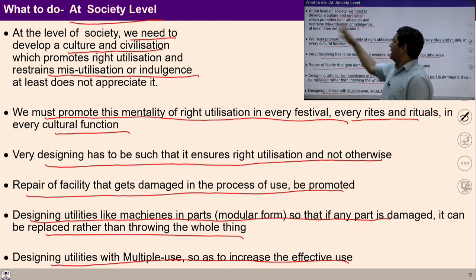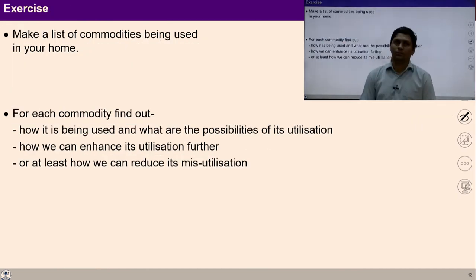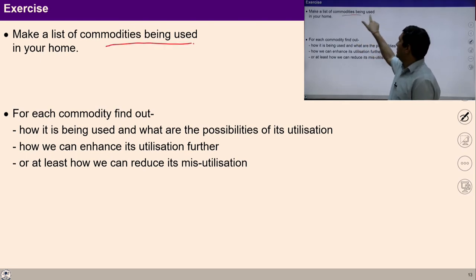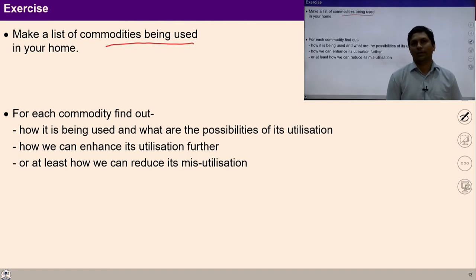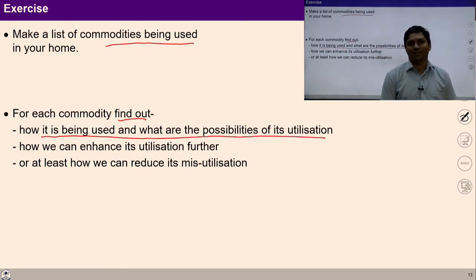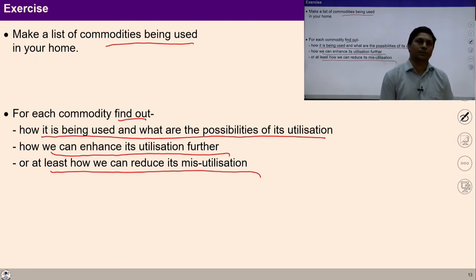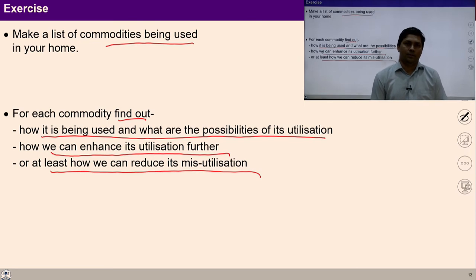All these can be done at the level of society to help us rightly utilize things. A simple exercise you can do at home: make a list of commodities being used in your home, and for each commodity find out how it is being used and what are the possibilities of its utilization, how we can enhance its utilization further, or at least how we can reduce its mis-utilization. You can share your ideas with others to ensure right utilization of commodities.